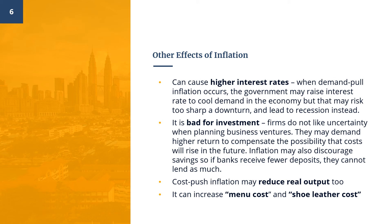Cost-push inflation may reduce real output too. As discussed in the previous video lecture, cost-push inflation happens when there is a fall in aggregate supply or output. Inflation may also increase menu cost and shoe leather cost. A menu cost is the cost to a firm resulting from changing its prices — the name stems from the cost of restaurants literally printing new menus, but economists use it to refer to the costs of changing nominal prices in general. Shoe leather cost refers to the cost of time and effort that people spend trying to counteract the effects of inflation, such as holding less cash and having to make additional trips to the bank. Money loses value with inflation, leading to a drop in the purchasing power of an individual ringgit.